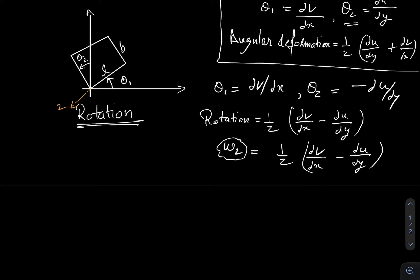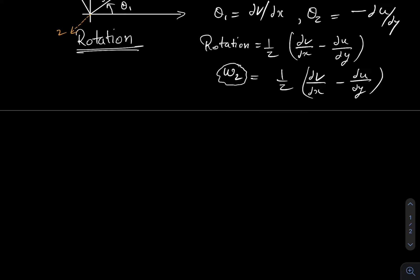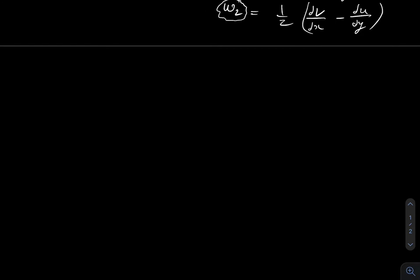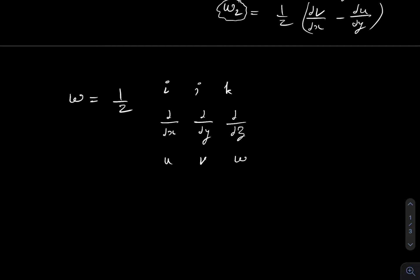Similarly, there will be rotation about the y-axis and rotation about the x-axis. We denote u, v, w as the velocity components of fluid particles in x, y, z directions respectively. We can write the formula for rotation in matrix form: omega equals half times the determinant of the matrix with rows (i, j, k), (del/del x, del/del y, del/del z), and (u, v, w).